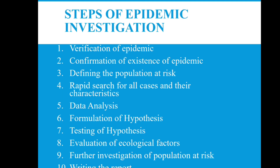Steps of Investigation — there are 10 steps: 1. Verification of disease; 2. Confirmation of existence of epidemics; 3. Defining the population at risk; 4. Rapid search for all cases and their characteristics; 5. Data analysis; 6. Formulation of hypothesis; 7. Testing of hypothesis; 8. Evaluation of ecological factors; 9. Further investigation of population at risk; and 10. Writing the report.